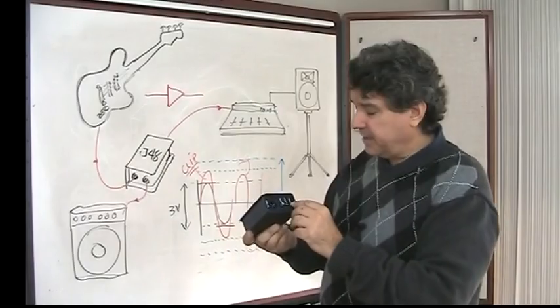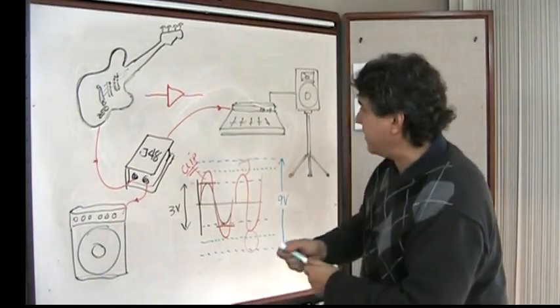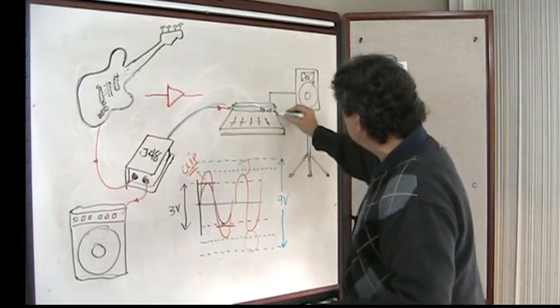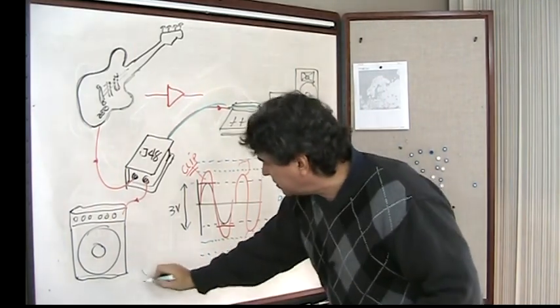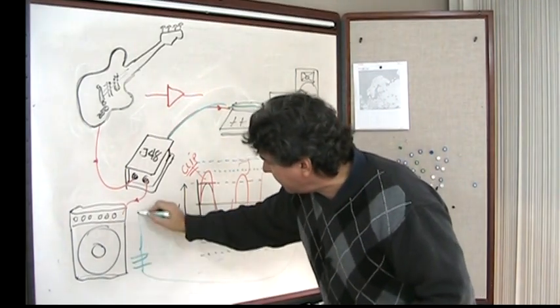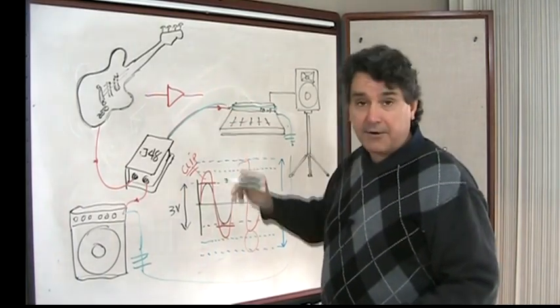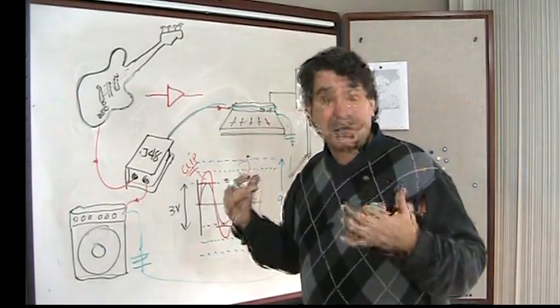You've also got a ground lift switch, which allows us to eliminate some ground loop problems. And how that occurs, of course, is that the signal going through the mixing console here actually goes to ground at one point. That goes to the ground that's connected to the amplifier and which, in turn, would cause a ground loop. By being able to lift the ground at the output of the J48, you can eliminate the hum and buzz caused by ground loops.